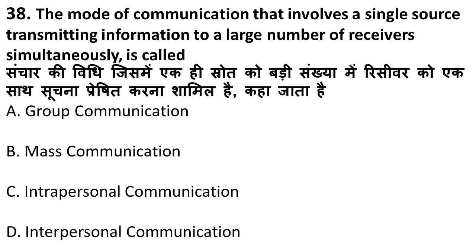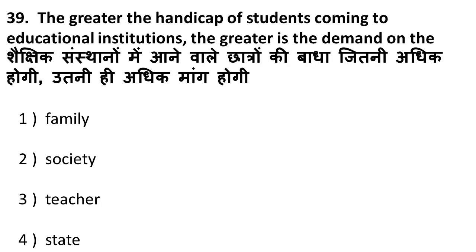Next question: the mode of communication that involves a single source transmitting information to a large number of receivers simultaneously is called what? This is valid for TV and radio. Since you have a large or mass audience, the correct answer is mass communication. Examples of mass communication are TV and radio.